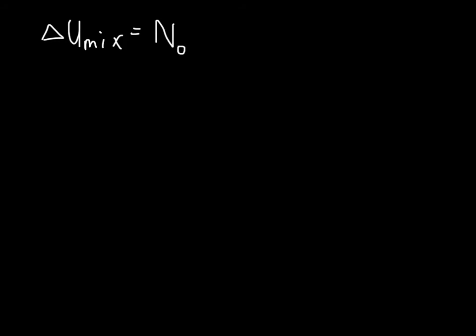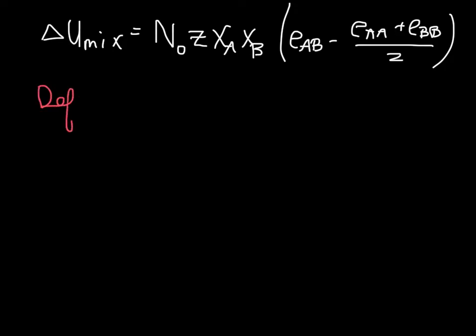N naught, the number of atoms, times the coordination number Z, times XA XB, and then this term which contains the bond energies. We are going to define alpha to be equal to all of the stuff excluding these mole fractions. We define this to be N0 Z and then this energy term.